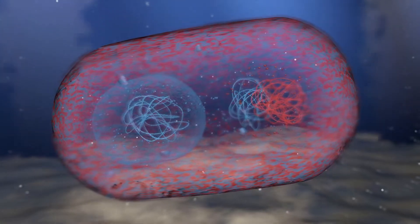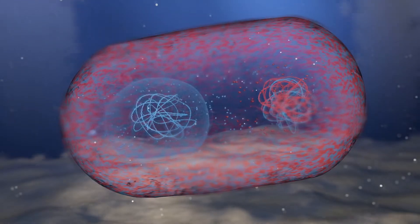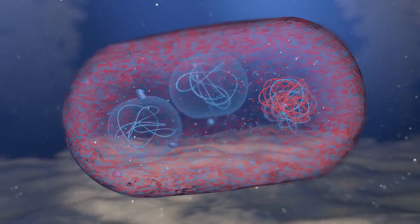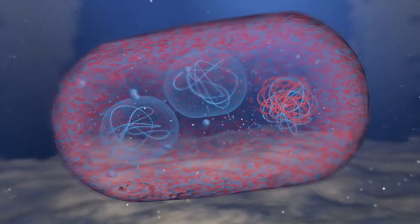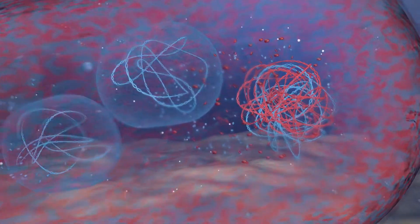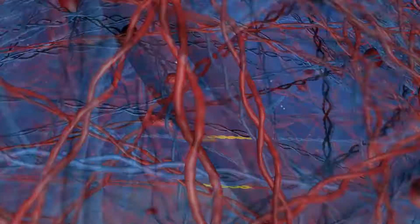Gene transfer can occur over multiple rounds and carries some fateful hitchhikers, which become visible as we zoom in. Group 2 introns, shown here in yellow.